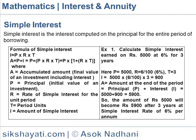Formula of Simple Interest: I = P × R × T, and A = P + I = P + P×R×T = P(1 + R×T), where A is the Accumulated Amount (Final Value of an Investment including Interest), P is the Principal (Initial Value of an Investment), R is the Rate of Simple Interest per period, T is the time period, and I is the Amount of Simple Interest.